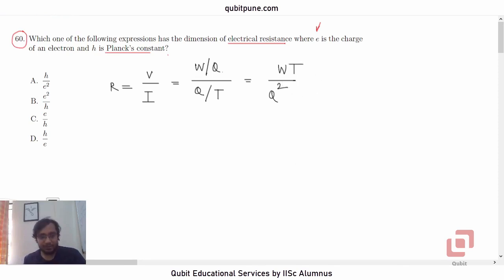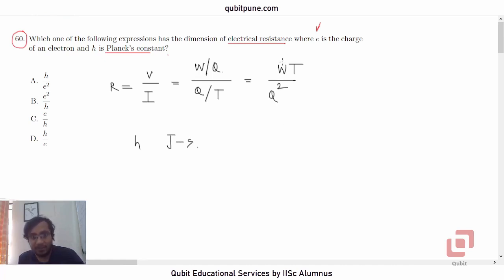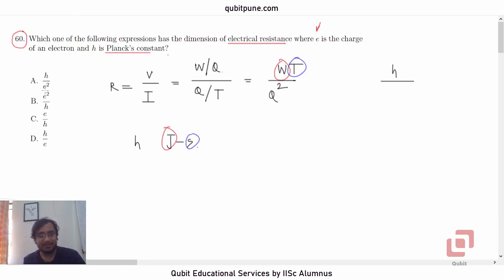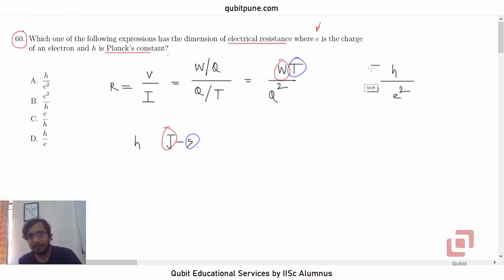Now our job is done, if you know that the SI unit of Planck's constant is Joule second. The SI unit of work done is Joule, and the SI unit of time is second. So W times T has the same dimensions as that of H. And what is Q squared? E squared is the square of the charge of an electron, and Q squared is essentially the same in dimensions. So H upon E squared will be dimensionally the same as resistance.